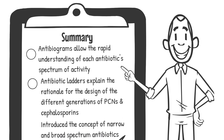To summarize this video: first, we introduced you to the antibiogram that shows all the key bacterial pathogens and their relative sensitivities to different antibiotics. We then introduced you to the concept of antibiotic ladders that explain the different generations of penicillins and cephalosporins. Finally, we introduced you to the concept of narrow-spectrum versus broad-spectrum antibiotics. In the final video, we will describe how to use the antibiogram to design empiric antibiotic regimens and review the seven steps for effectively prescribing antibiotics. Thank you.